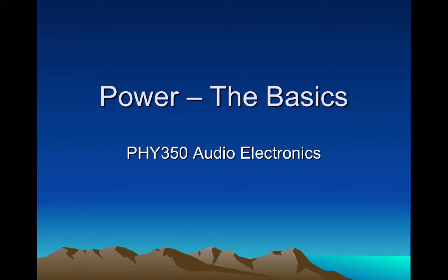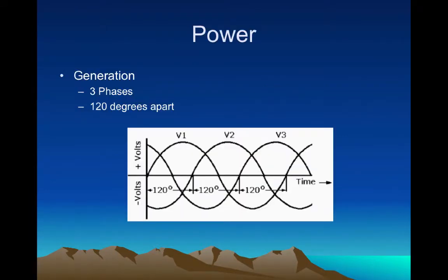Today we're going to talk about the basics of power. We can't talk about that without first talking about generation of power from the power company. It's generated in three different phases that are 120 degrees apart from each other. Here's a quick diagram of what it would look like — phase one, phase two, and phase three, each 120 degrees apart from the other.